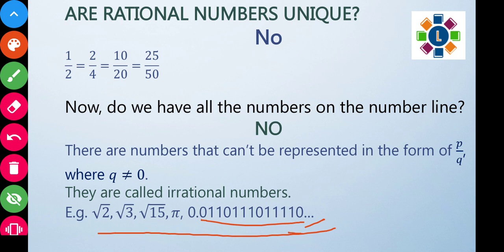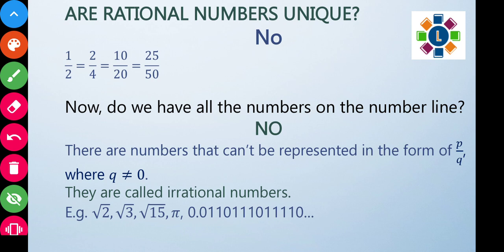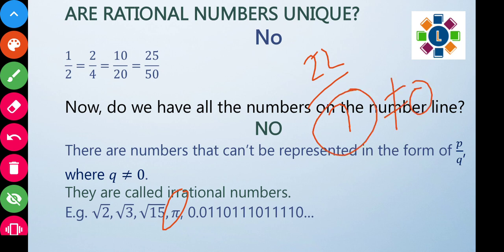Pi is an example of an irrational number. Some people think 22 by 7 is pi, but 22 by 7 is only an approximate value of pi. Since 22 by 7 is in P/Q form and Q is not zero, 22 by 7 is actually a rational number — not irrational.